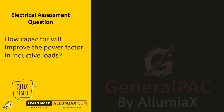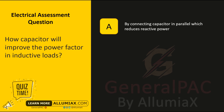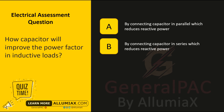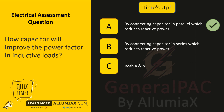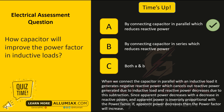How will a capacitor improve the power factor in inductive loads? A: By connecting the capacitor in parallel, which reduces reactive power. B: By connecting the capacitor in series, which reduces reactive power. C: Both A and B. Time's up. The answer is A: By connecting the capacitor in parallel, which reduces reactive power. When we connect the capacitor in parallel with an inductive load, it generates negative reactive power, which cancels out the reactive power generated by the inductive load. Since apparent power decreases with a decrease in reactive power, and apparent power is inversely proportional to the power factor, if apparent power decreases, then the power factor will increase.